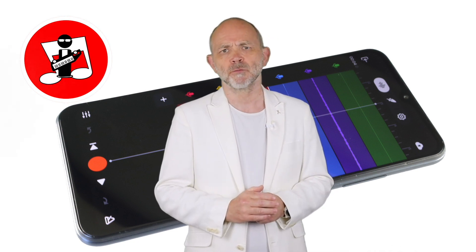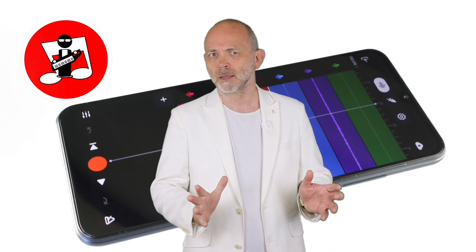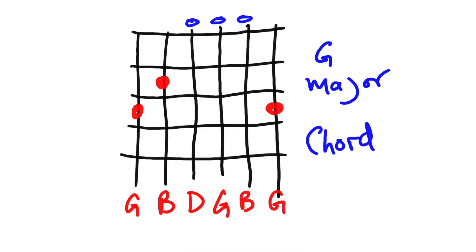Now let's add a guitar riff using the G major chord. To do this we need to understand what a G major chord looks like on a guitar. Here is a guitar tab showing the G major chord. The lowest pitch string is on the left and the highest pitch string is on the right. We can see from the tab that the string notes are G, B, D, G, B, and G.